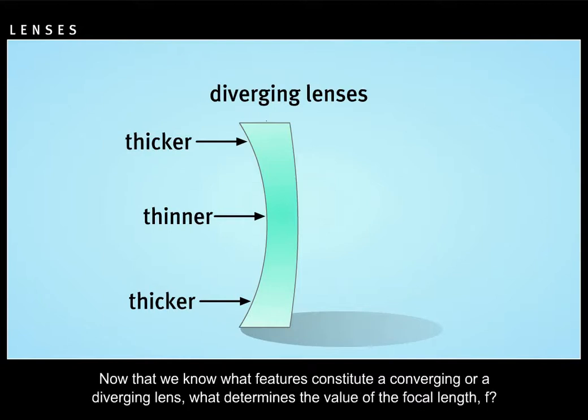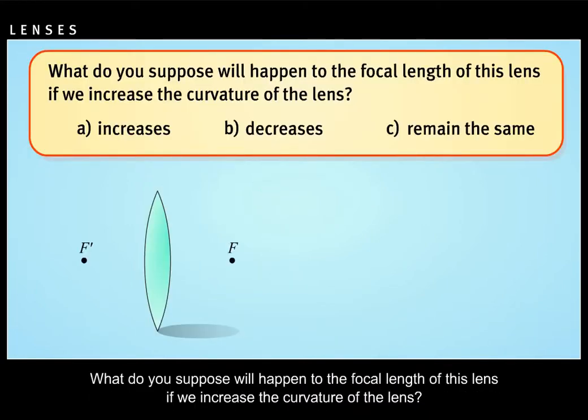Now that we know what features constitute a converging or a diverging lens, what determines the value of the focal length, F? What do you suppose will happen to the focal length of this lens if we increase the curvature of the lens?